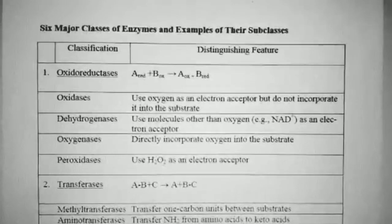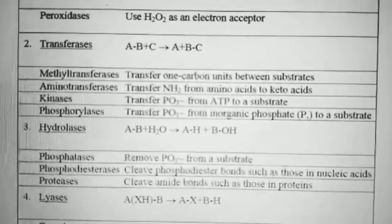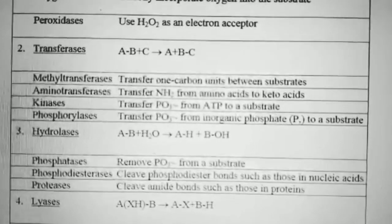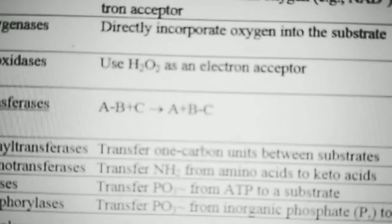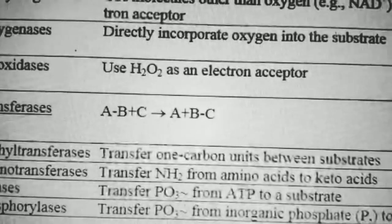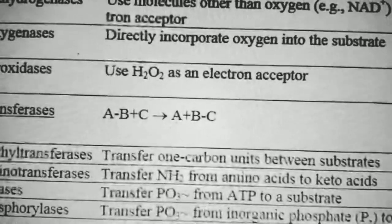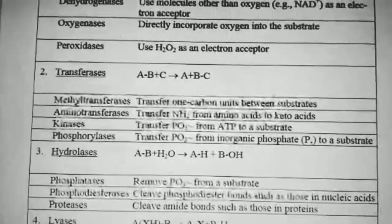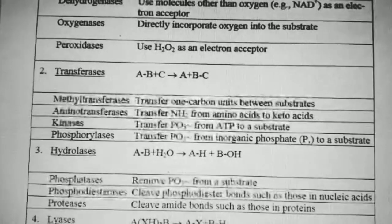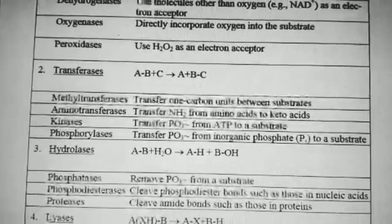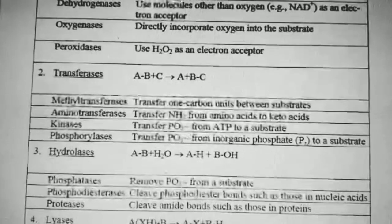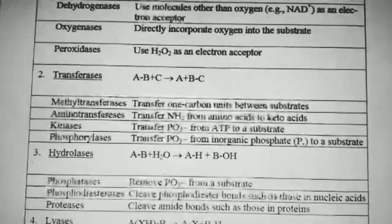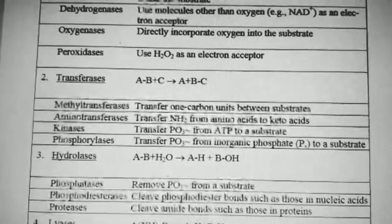Transferases result in the transfer of a molecule from one substrate to another — for example, A-B reacts with C to give A and B-C, so substrate B is transferred from A to C. Subclasses include: methyltransferases, which transfer a one-carbon methyl group between substrates; aminotransferases, which transfer an amino group from one amino acid to keto acids; kinases, which transfer a phosphate group from ATP to a substrate; and phosphorylases, which transfer a phosphate group from inorganic phosphate to a substrate.